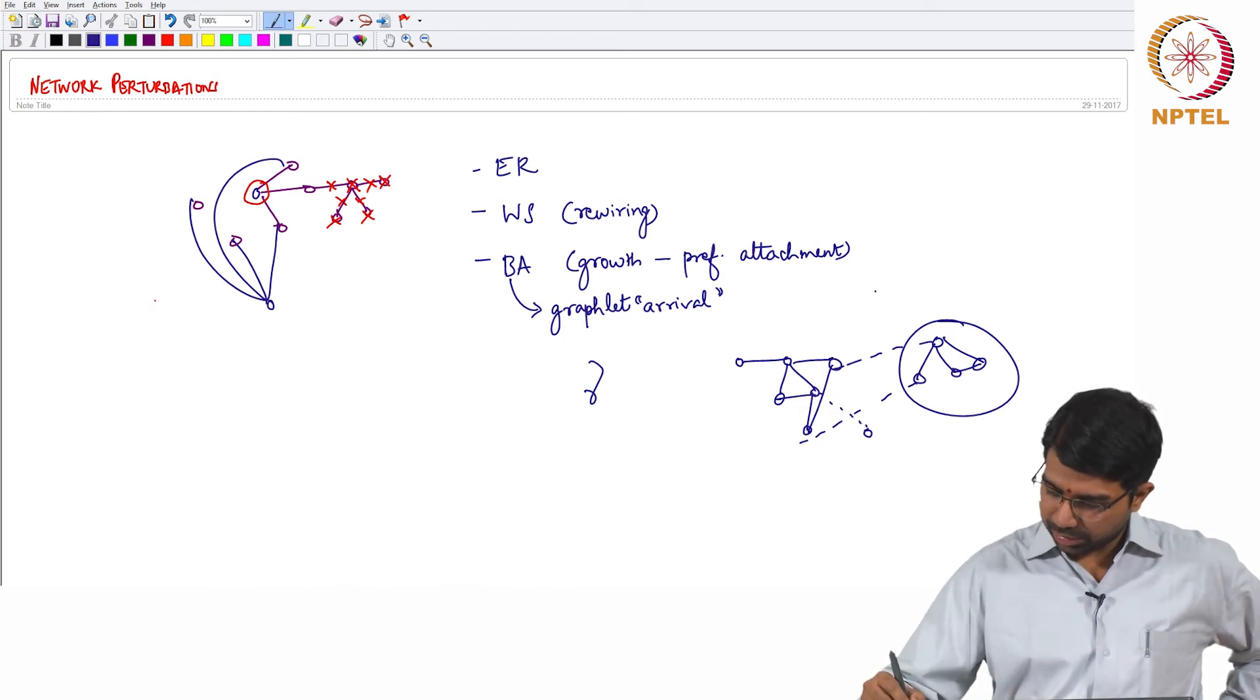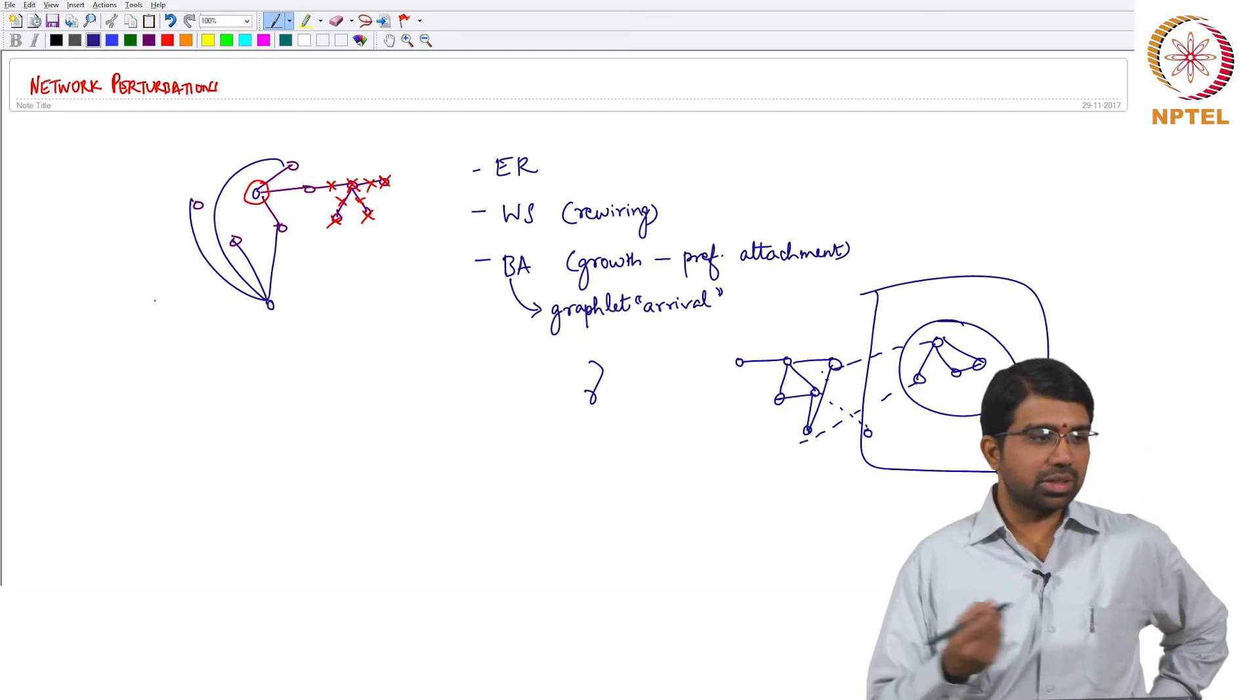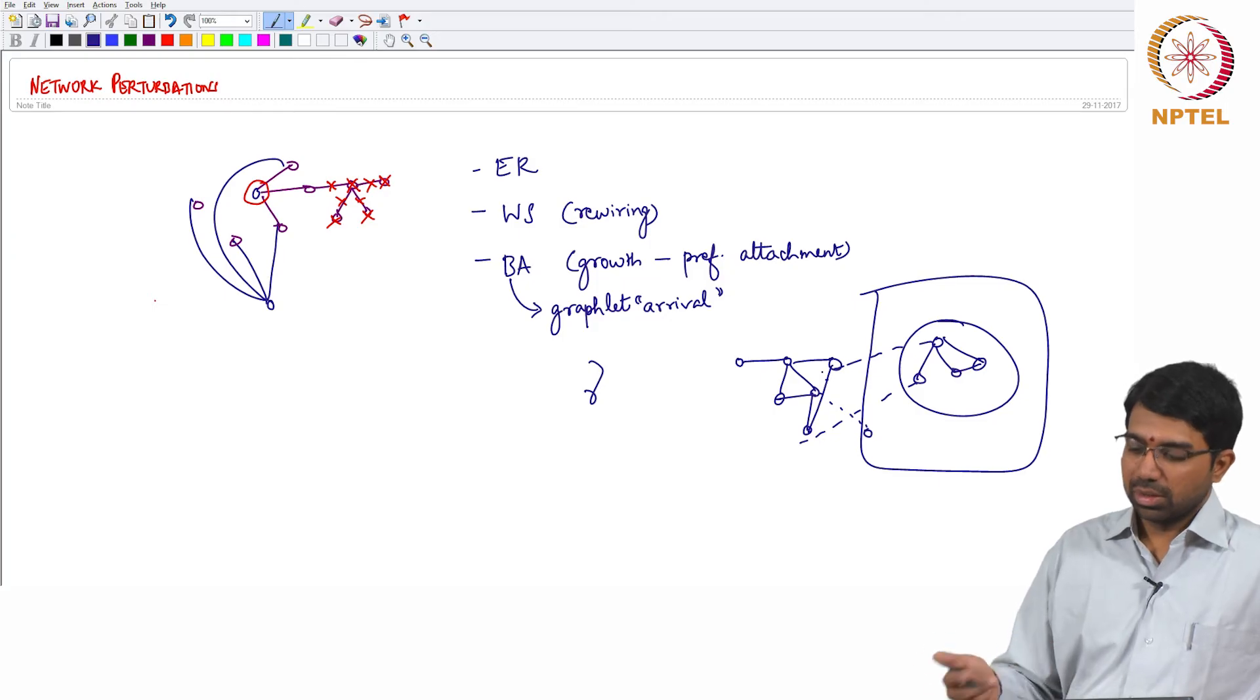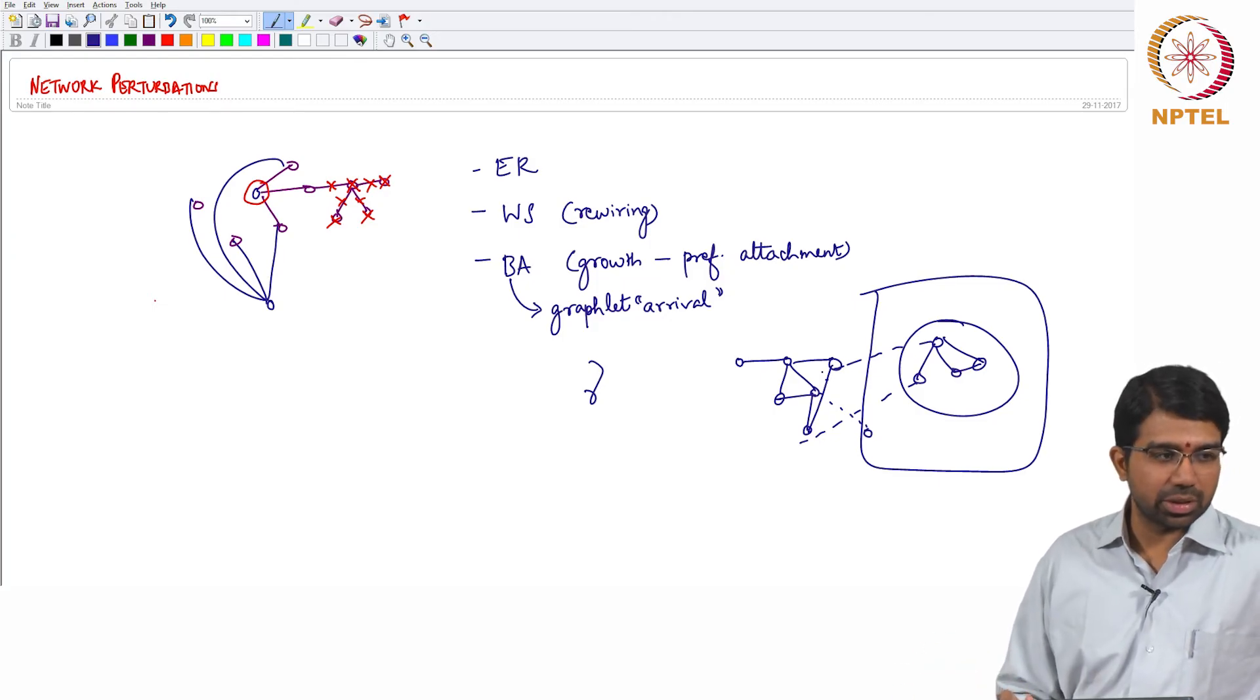This is essentially a perturbation. Adding this network to the original network is a perturbation. So you can perturb by loss of nodes which is the most common way to perturb a network but this is potentially a perturbation that you want to understand as well.